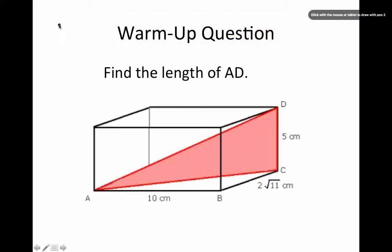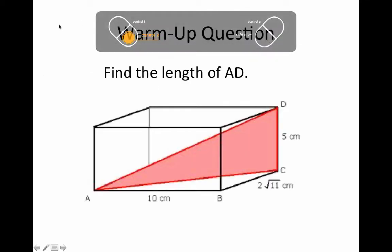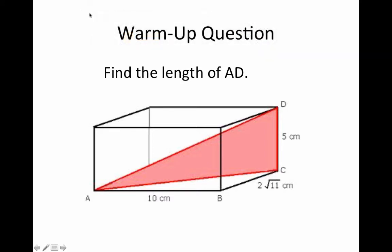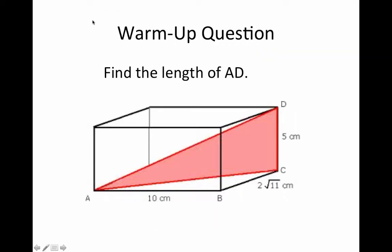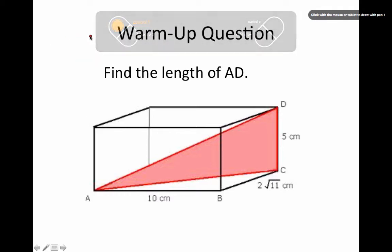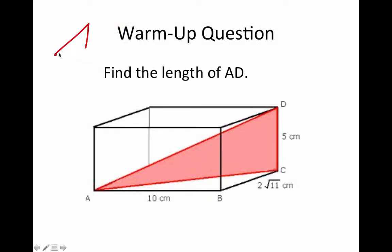First thing we need to remember is the Pythagorean theorem. The Pythagorean theorem is for right triangles. We've got to identify the hypotenuse — we have a, b, c — and c is always going to be the longest side. a² + b² = c².